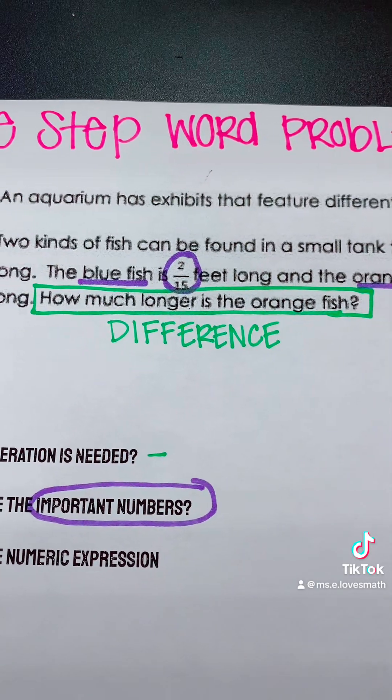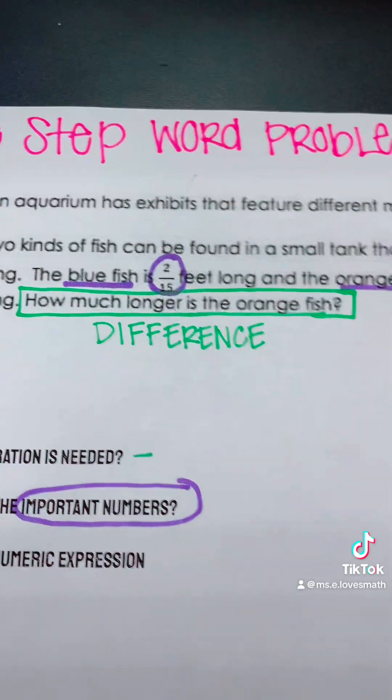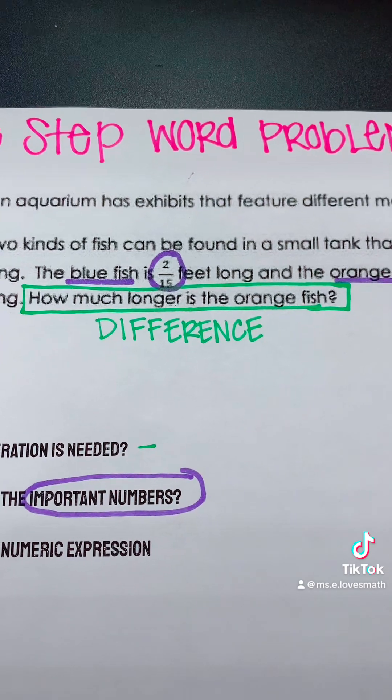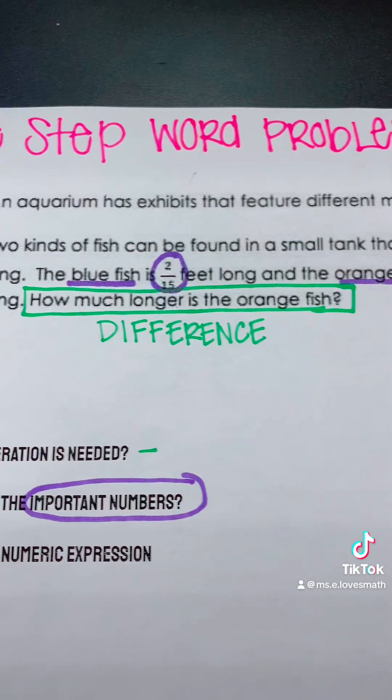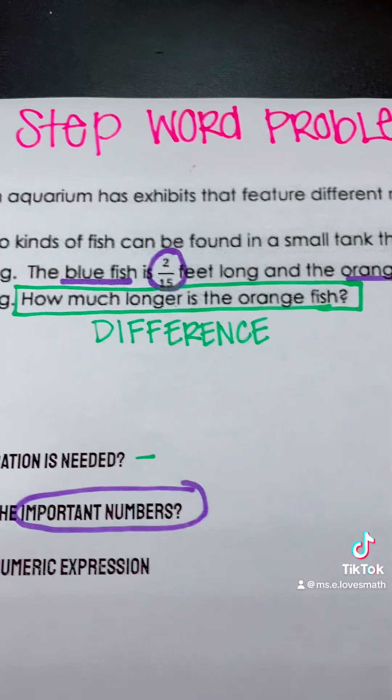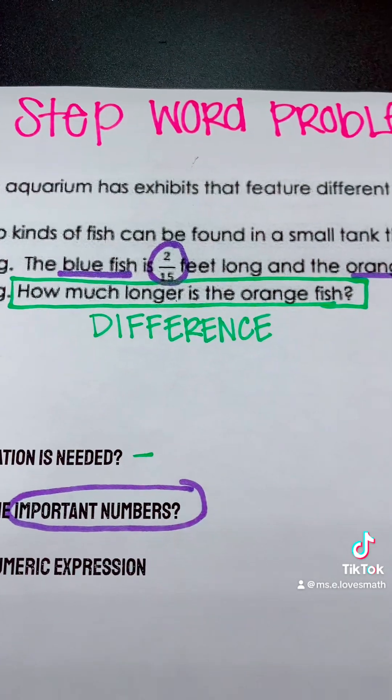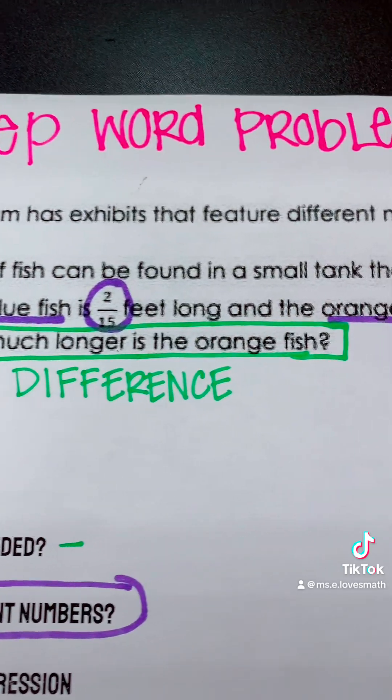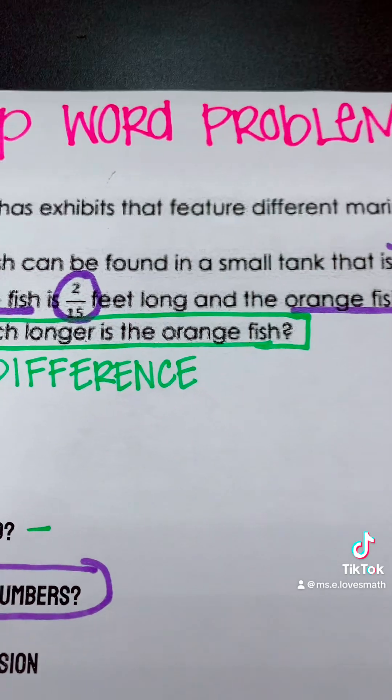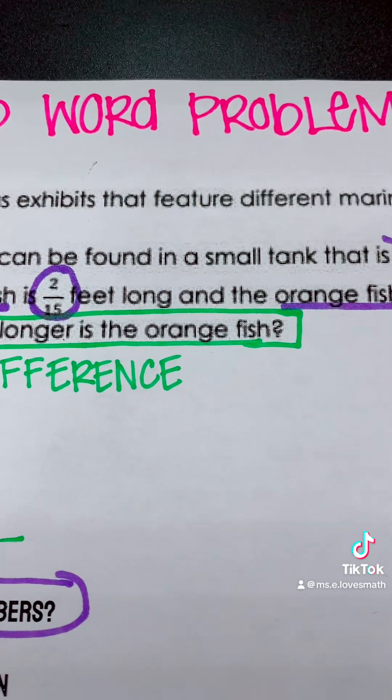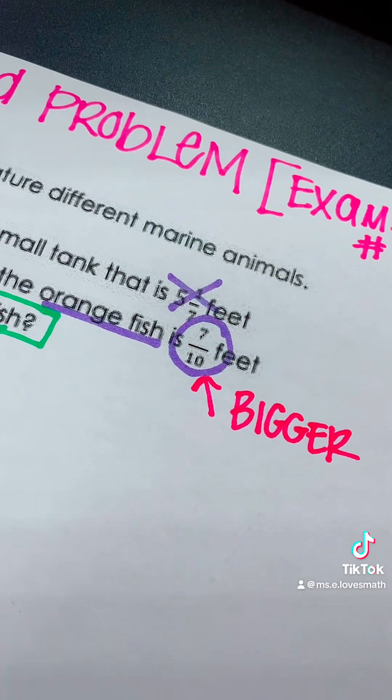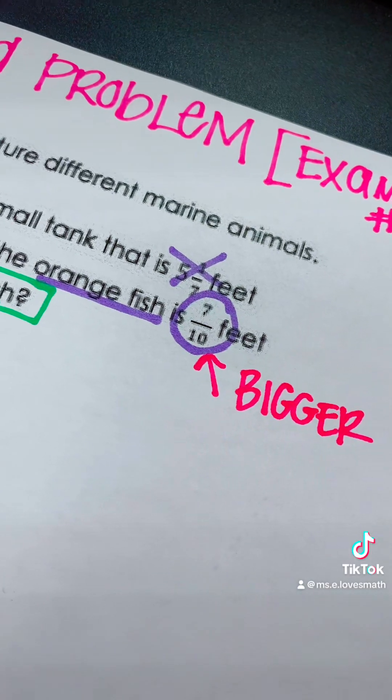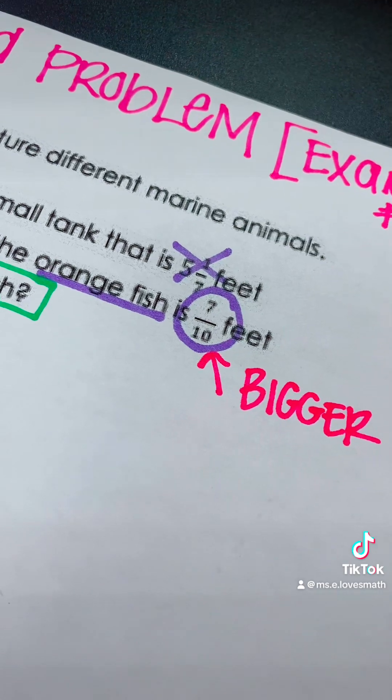When subtracting, we need to subtract the larger fish minus the smaller fish. So we need to know which fish is larger so that we can put that number first. It's asking how much longer is the orange fish, meaning the orange fish is the longer or bigger fish. So 7/10, our orange fish size, is our bigger number.